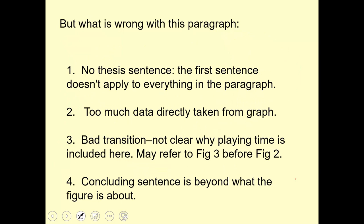To sum up the problems with this version: no real thesis sentence, too much data taken directly from the graph, and a bad transition at a minimum. The minutes per game probably doesn't belong in this paragraph at all. Also, you can't refer to a figure — like Figure 3 in this case — before you've discussed Figure 2. And finally, the concluding sentence is a concluding sentence, but it's way beyond what the figure is all about, what the data is all about, and what this paragraph is really all about.